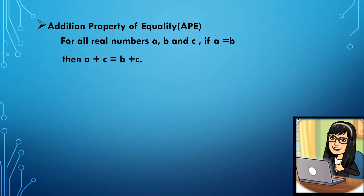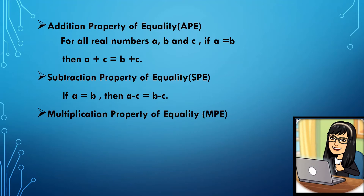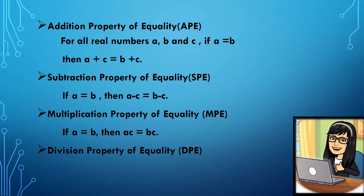Addition property: for all real numbers A, B, and C, if A is equal to B, then A plus C is equal to B plus C. Subtraction property: if A is equal to B, then A minus C is equal to B minus C. Multiplication property of equality, or MPE: if A is equal to B, then A times C is equal to B times C. If you notice, when we add, subtract, multiply, or divide an equal value on both sides of the equal sign, the expressions remain equal.